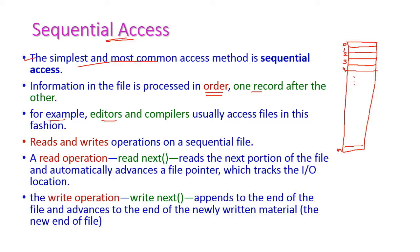Editors and compilers typically access files in sequential fashion, one after another. Reads and write operations are most common in sequential files. Let us see how these operations take place. For the read operation, the file pointer will always point to the beginning of the file — BOF, beginning of the file. Once it reads the first record, it will automatically read the next record. That is 'read next' — it reads the next portion of the file.